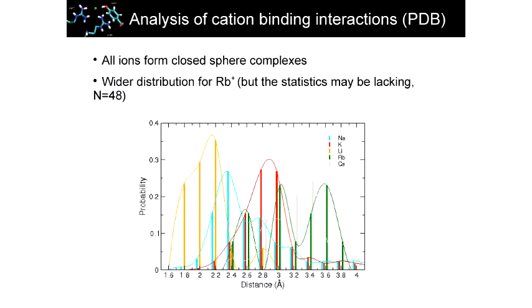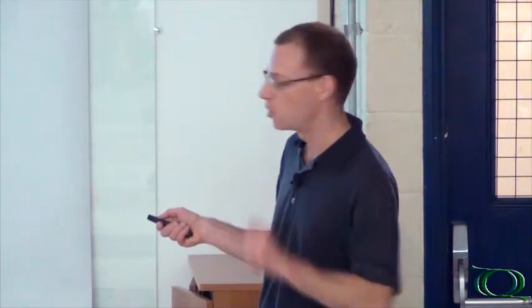I'm getting closer to the end and want to speak about statistics. We wanted to know how cations interact with proteins. I've been looking at structures of proteins from the Protein Data Bank to identify, for example, if lithium ions can really bind to proteins. This is the distance and this is the probability to have an ion at that distance. When you have crystal structures of proteins with ions, the ions are relatively close to oppositely charged residues, and they all have quite simple distributions where ions prefer to be very close to the protein surface.